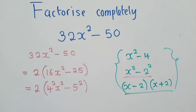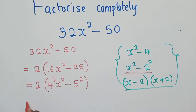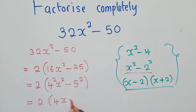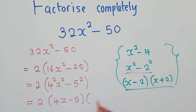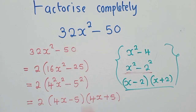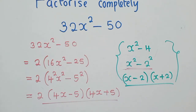So now from this stage we can do our final part. We write 2, then x minus 5 — just like we did in the example — then we copy it again and change the sign to plus, giving us x plus 5. So the full factorized answer is 2(x − 5)(x + 5). This is what we call difference of two squares, and this is our solution.